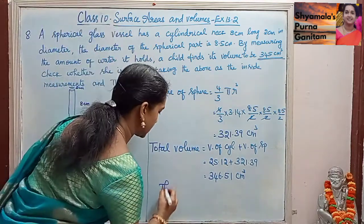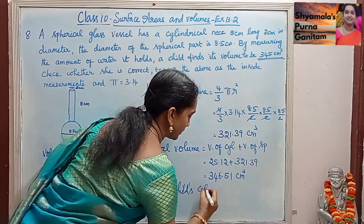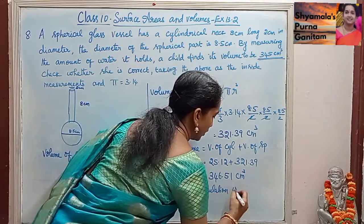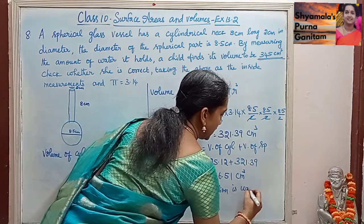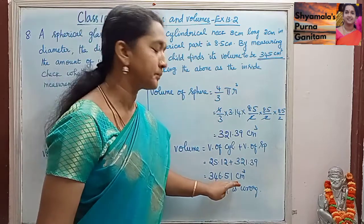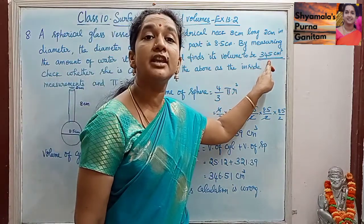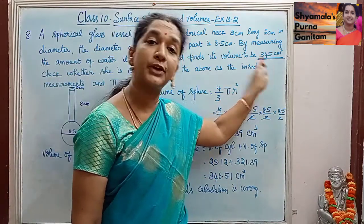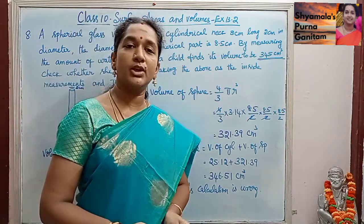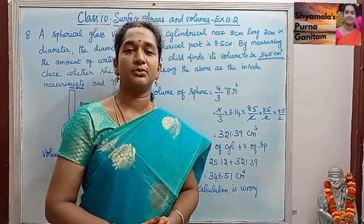The child's calculation is wrong. Actually she has rounded it off — we are getting 346.51 but she got only 345. So her calculation is wrong. This exercise is over. Thank you.